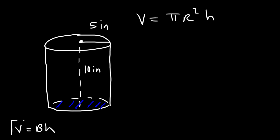For any prism, the volume is base times height. The area of the base, which is the area of the circle, is pi r squared, and so it's pi r squared times h. In this example, the radius is 5 and the height is 10.